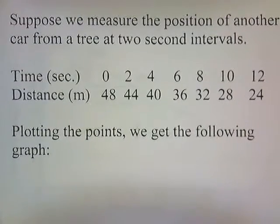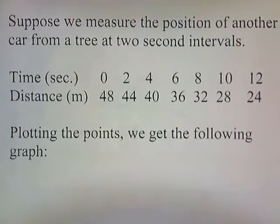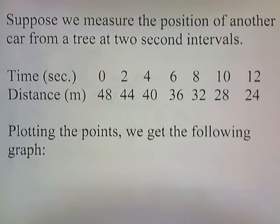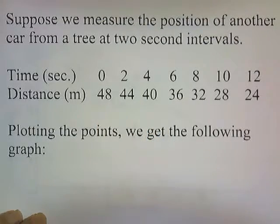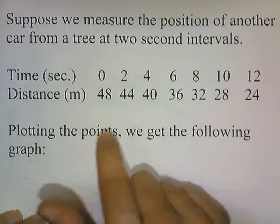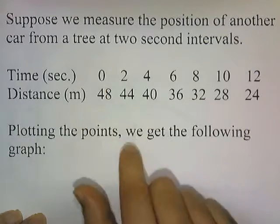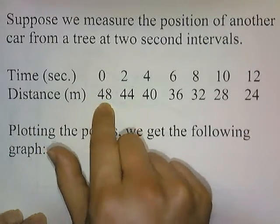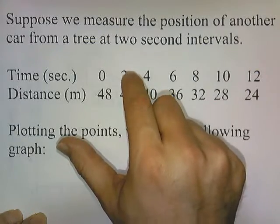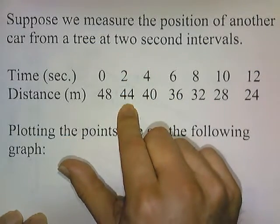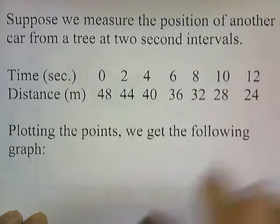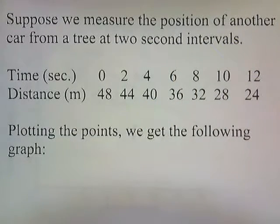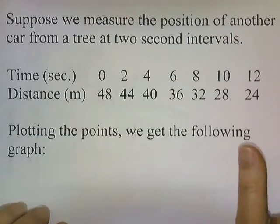Now suppose we measure the position of another car from a tree at 2-second intervals. When we start the stopwatch, the car is 48 meters away. Two seconds later, the car is 44 meters away from the tree. Four seconds later, it's 40 meters away, and so on. We see a general trend here. Plotting the points, we get the following graph.